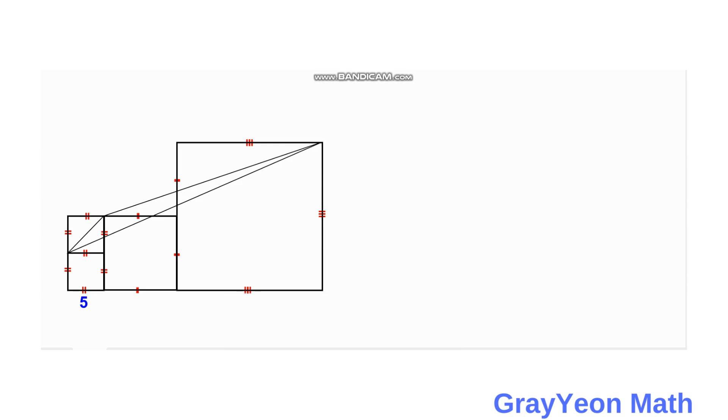Welcome to Grayon Math. We are asked to solve this problem. We have a set of squares in which the smaller square has a side length of 5, and the next squares have double of each side, so this is 10 and this is 20.